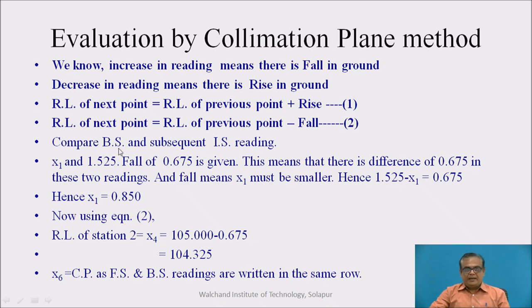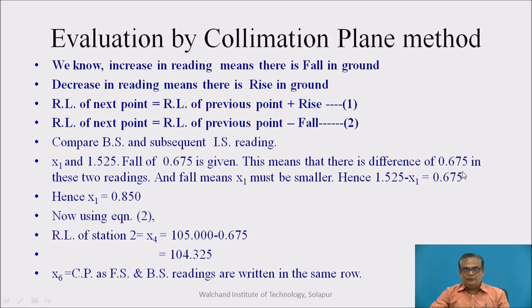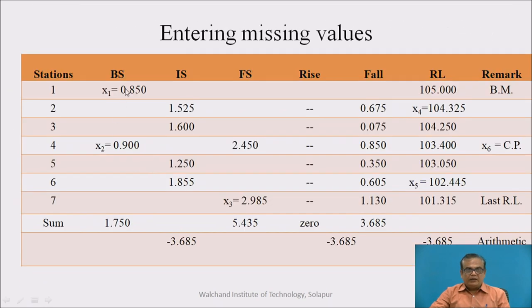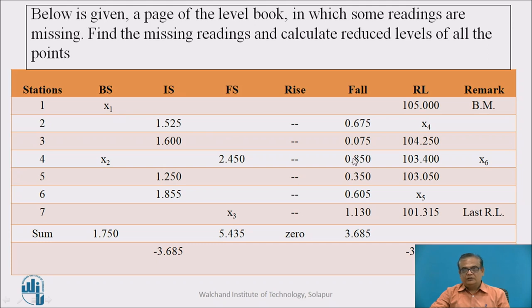And now, let us compare backside and subsequent IS reading, intermediate side reading, X1 and 1.525, these two readings. Difference between those two readings is 0.675. And one more thing is that the X1, that is backside reading is smaller because now there is fall in ground. So next reading is higher. So, this will be equation. 1.525 minus X1 must be equal to 0.675. Therefore, X1 is equal to 0.850. After solving this, we get X1 equal to 0.850. So, it is entered here. We have got one missing value in the form of X1 equal to 0.850.